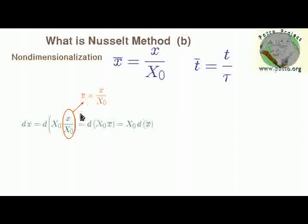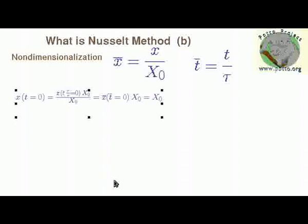Because x over x0 is equal to x bar, we have x0 times x bar, and since x0 is a constant we can take it out of the derivative. If we do the same thing to the initial condition, we multiply the time by the characteristic time tau and divide by tau. Since t over tau is t bar, and because the characteristic time cannot be zero, therefore t bar must be equal to zero. The same thing for x, and we get the initial condition which is x bar has to be equal to 1.